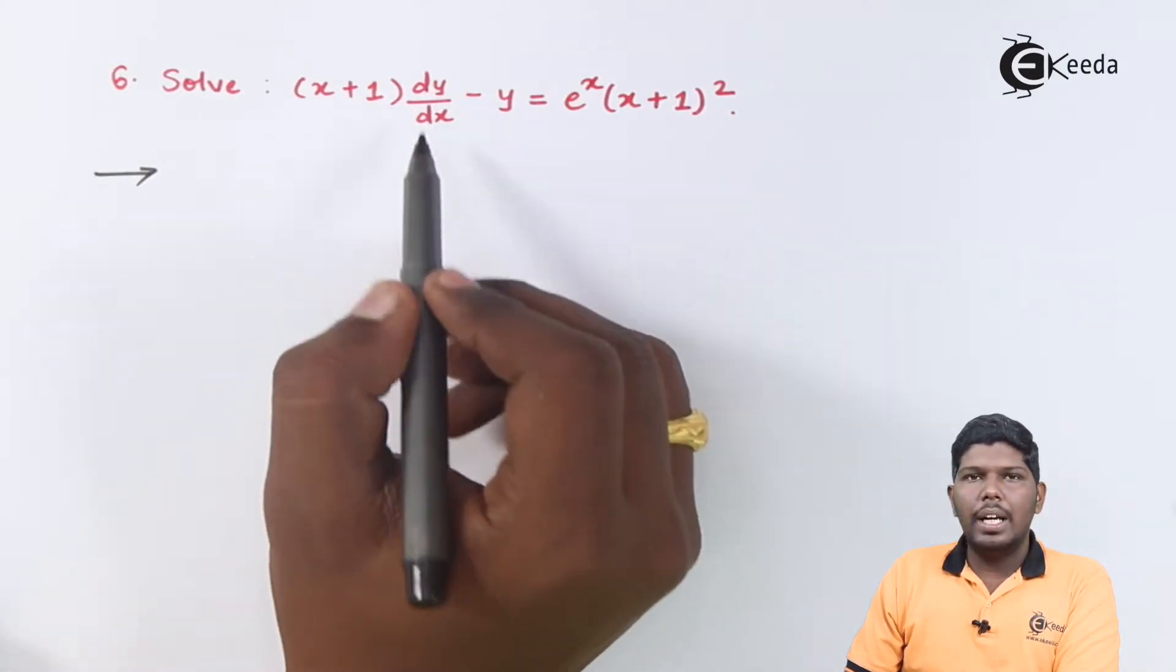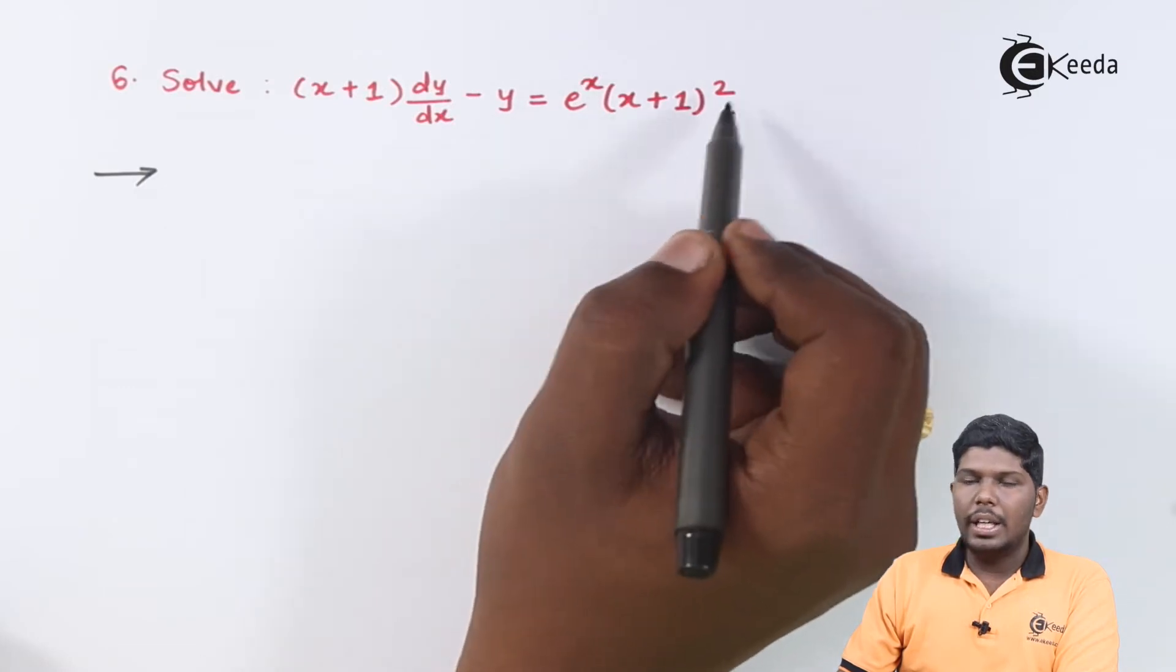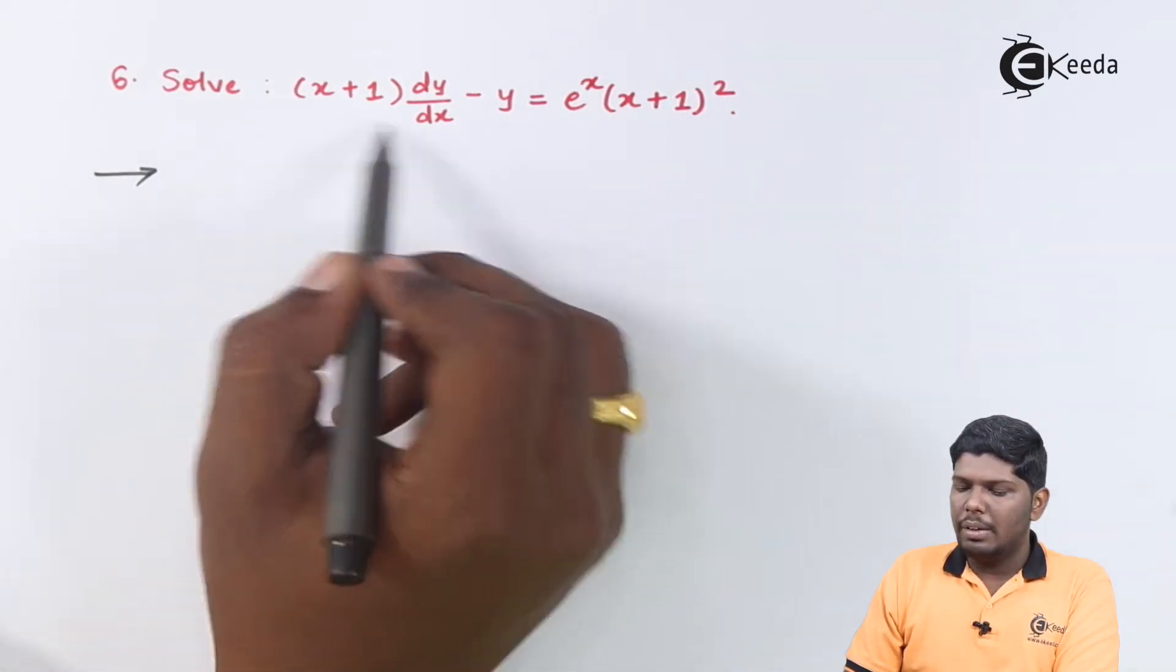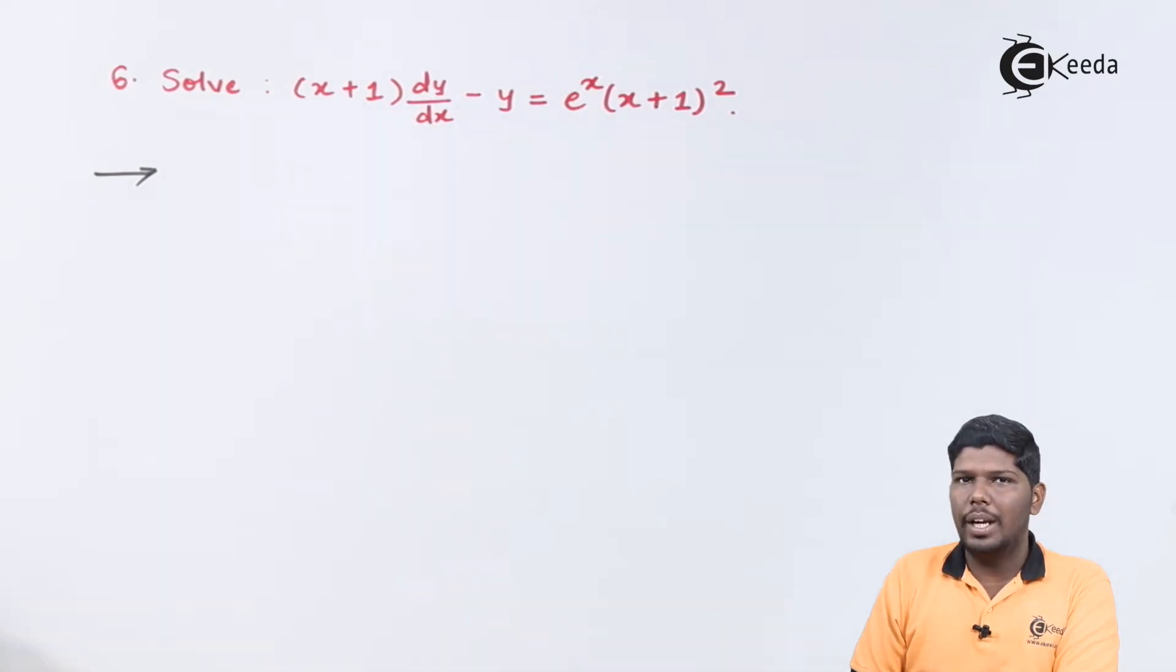Solve (x+1) dy/dx - y = e^x(x+1)^2. The first step that we are going to do is divide the equation by (x+1) as the coefficient of dy/dx should be equal to 1.